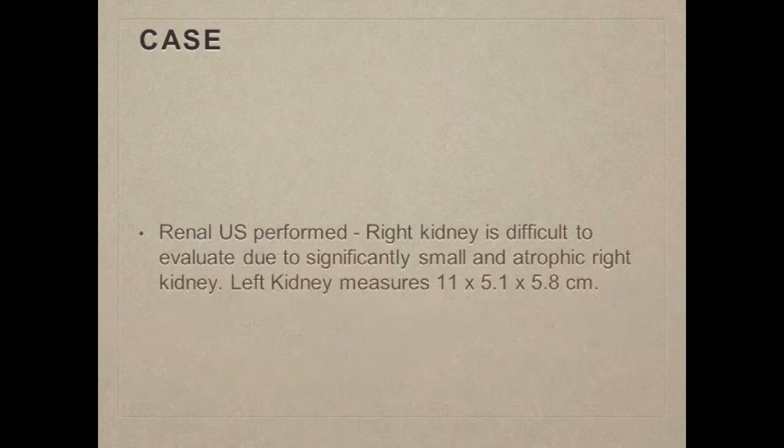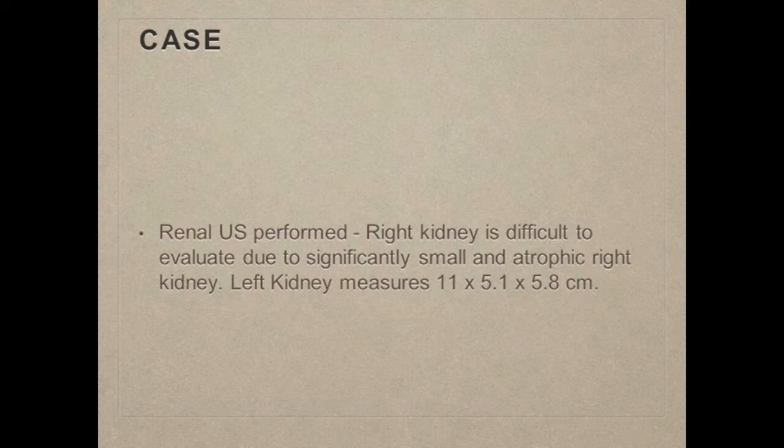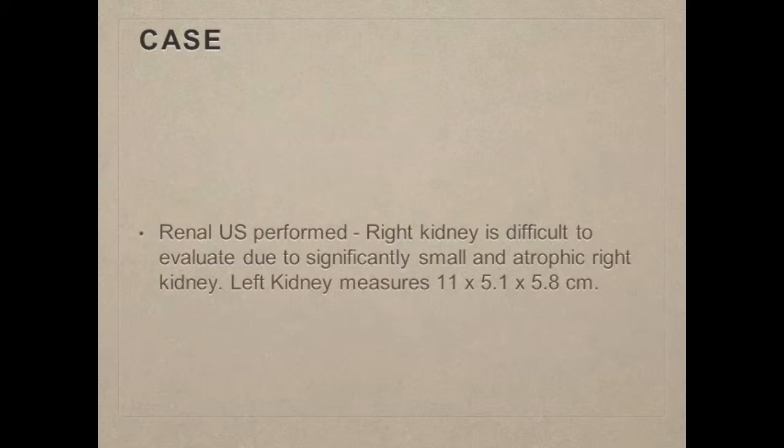Her blood pressure had dropped significantly relative to her presenting hypertension in the 190s. We noticed an increase in her creatinine over the next couple of days and were concerned that we were too aggressively diuresing her. We obtained a renal ultrasound to see what was going on. The right kidney was unable to be seen due to its atrophic state. The left kidney was normal in size at 11 by 5 by 5 centimeters. She didn't have any anatomical signs to explain the acute kidney injury — no obstruction, no hydronephrosis, and no signs of infection.